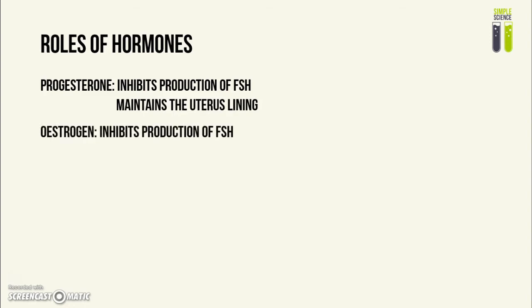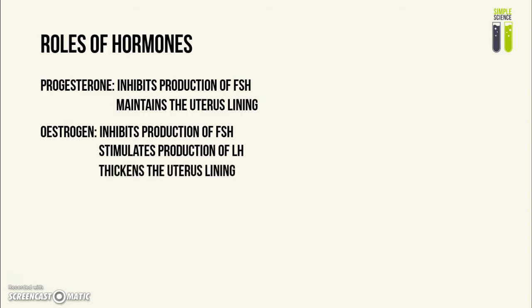Estrogen also inhibits the production of follicle stimulating hormone, and it stimulates the production of luteinizing hormone. It also thickens the uterus lining.